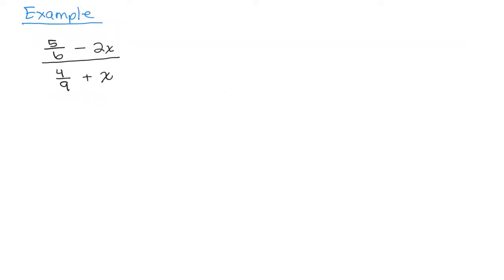We're going to do this example and we're going to use method two because it doesn't have just a single fraction in the numerator and denominator. So we're going to look at the fractions that we see and look at their denominators to decide the least common multiple.